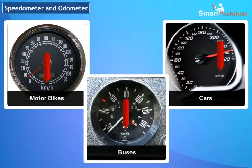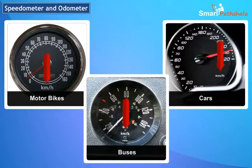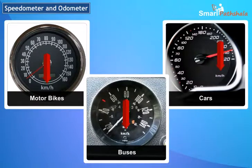These meters have kilometer per hour written at one corner. This is called a speedometer. It records speed directly in kilometer per hour.